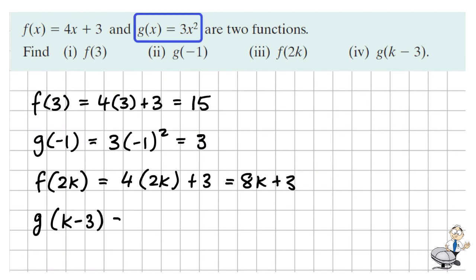g of k minus 3 means we're putting k minus 3 in for x in the g function. So this becomes 3 times k minus 3 squared. We square out the binomial and multiply our answer by 3. This gives 3k squared minus 18k plus 27.